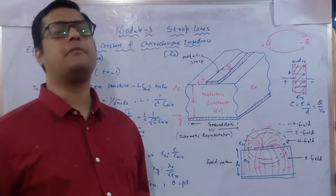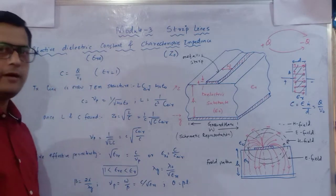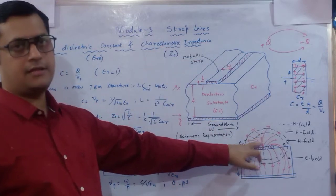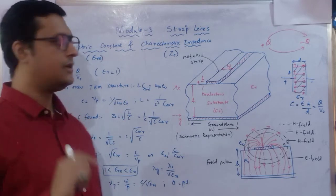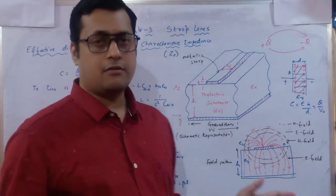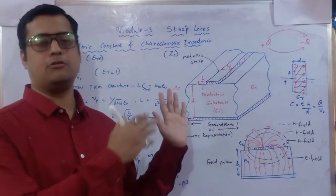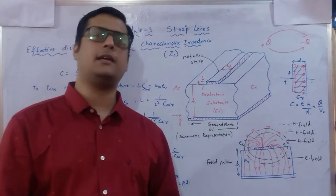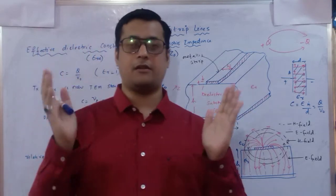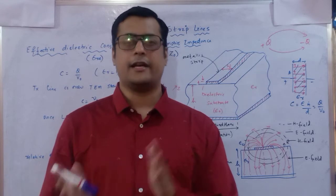The quantity Q/V₀ gives the capacitance for the air medium, with epsilon_r equal to one. To determine characteristic impedance, the structure must satisfy some transverse mode. Since it is quasi-TEM, it satisfies the TEM property. For a transmission line in TEM mode, we use the condition: L × C = μ × ε.